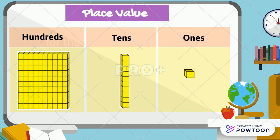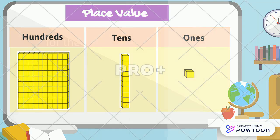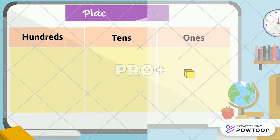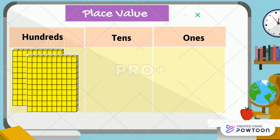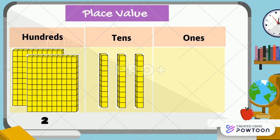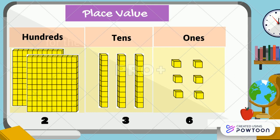One block on ones, like this. This will help us count how many blocks we have. For example, we have 200 blocks here, but we just write 2. Then 30 blocks, we write 3. Six blocks, we write 6. So altogether we have 236 blocks.